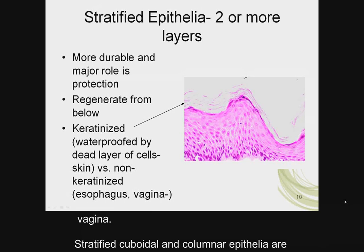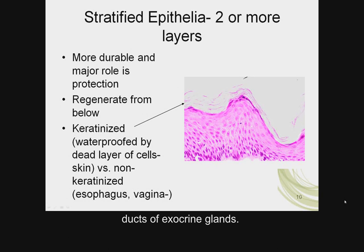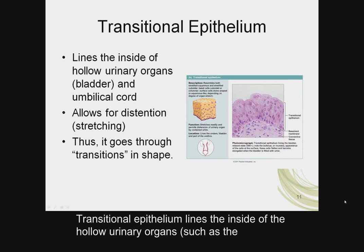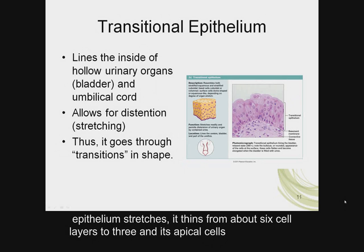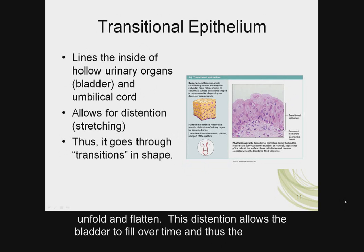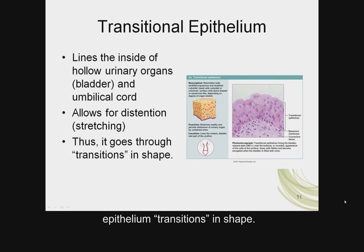Stratified cuboidal and columnar epithelia are rare, but are found in larger ducts of exocrine glands. Transitional epithelium lines the inside of hollow urinary organs such as the bladder. The bladder stretches as it fills with urine. As the transitional epithelium stretches, it thins from about six cell layers to three, and its apical cells unfold and flatten. This distension allows the bladder to fill over time, and thus the epithelium transitions in shape.